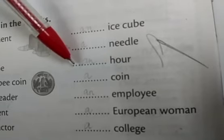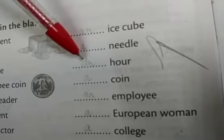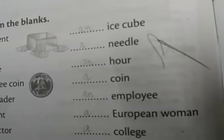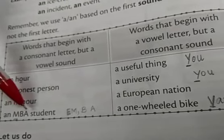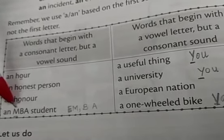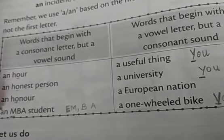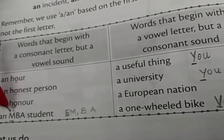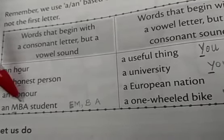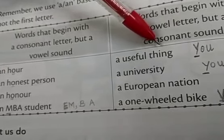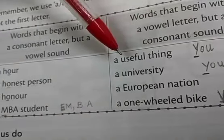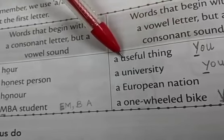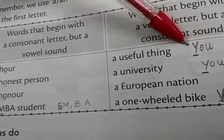You have to listen to the sound and then write A or AN. Here, 'MBA student' — M comes under consonant, but we write AN because M sounds like 'em', and that sound is a vowel. So: AN MBA student. Also, 'a useful thing' — this U sounds like Y-O-U and Y is a consonant, so we write: A useful thing.